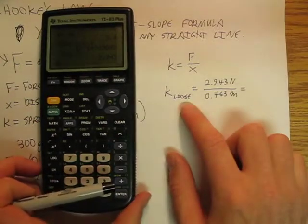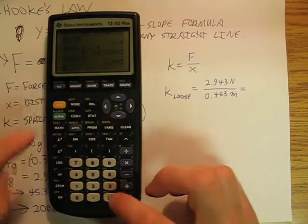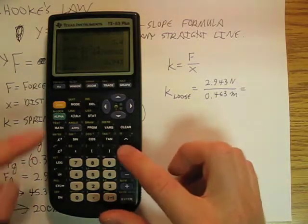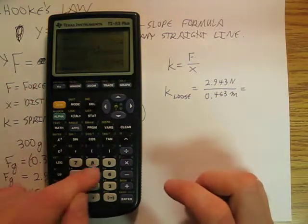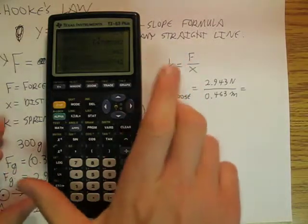So the loose spring is going to be 2.943, which I already have up on my calculator, divided by 0.453. So we're going to call that 6.5 newtons per meter.